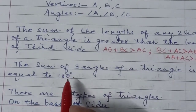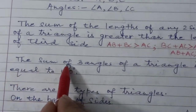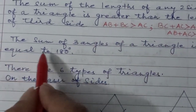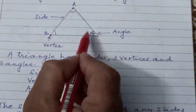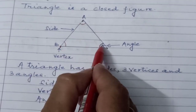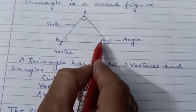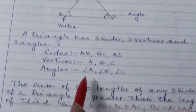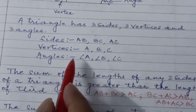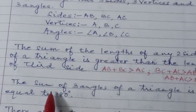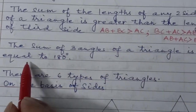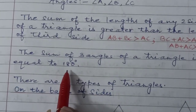Next property: the sum of the three angles of a triangle is equal to 180 degrees. Let's proceed.